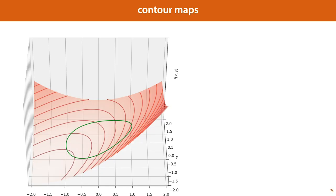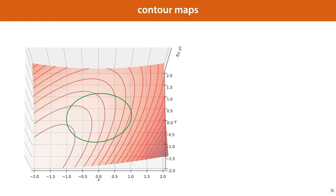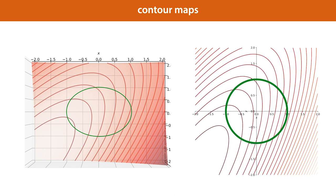One way to help us visualize this problem is to draw ISO lines, also known as contours, for the function f. These are the curves that indicate where the function is equal to some constant value. If we then rotate the camera so that it looks down onto the xy plane, we get a two-dimensional plot of our function, where the contour lines give us an idea of the height of the function. This principle is also used often in maps to indicate elevation.